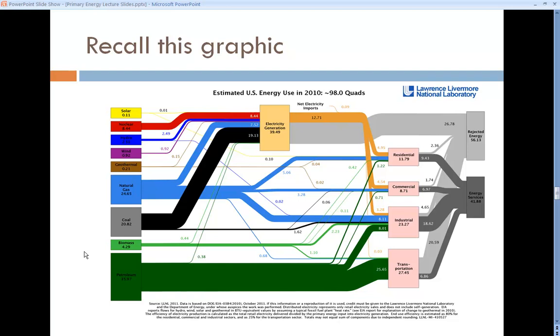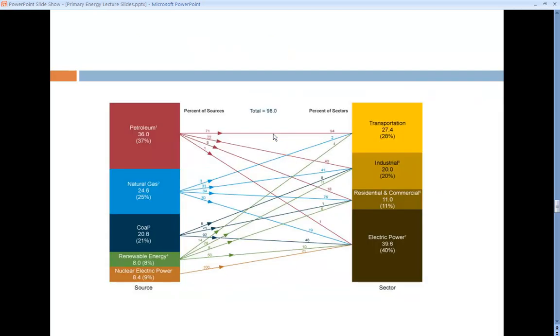Remember this graphic from Lawrence Livermore Laboratories. They do a much better job in this graph of accounting for those thermal losses. It shows up explicitly. This gray area, the thermal conversion losses from all the electricity generated.